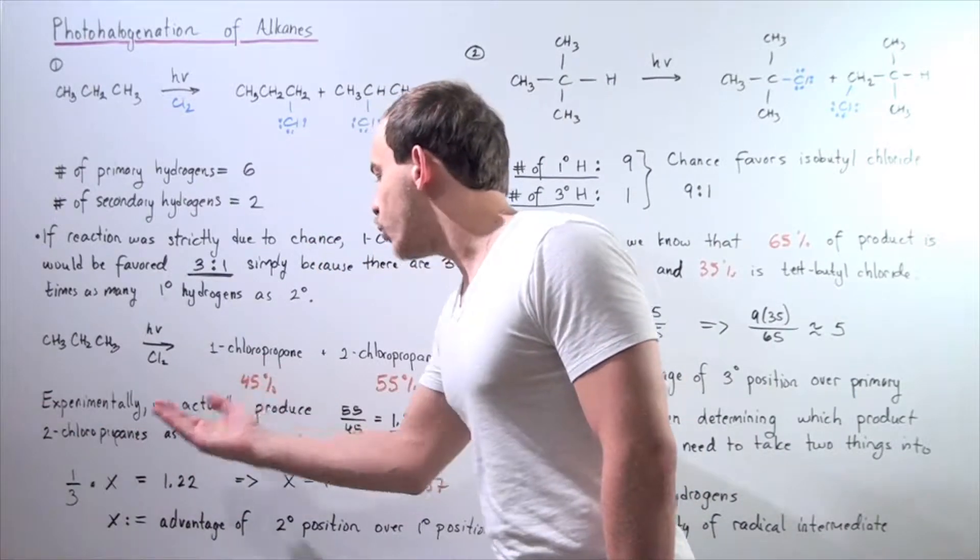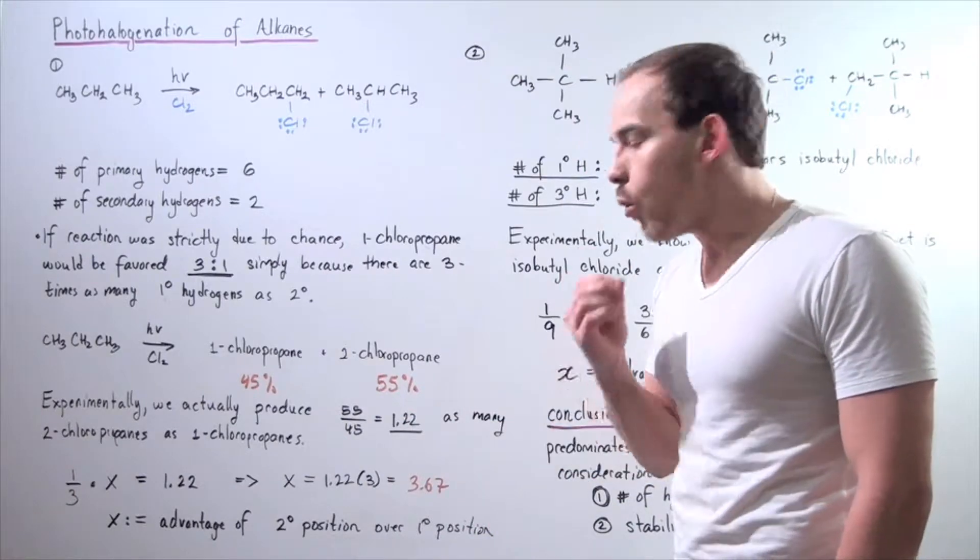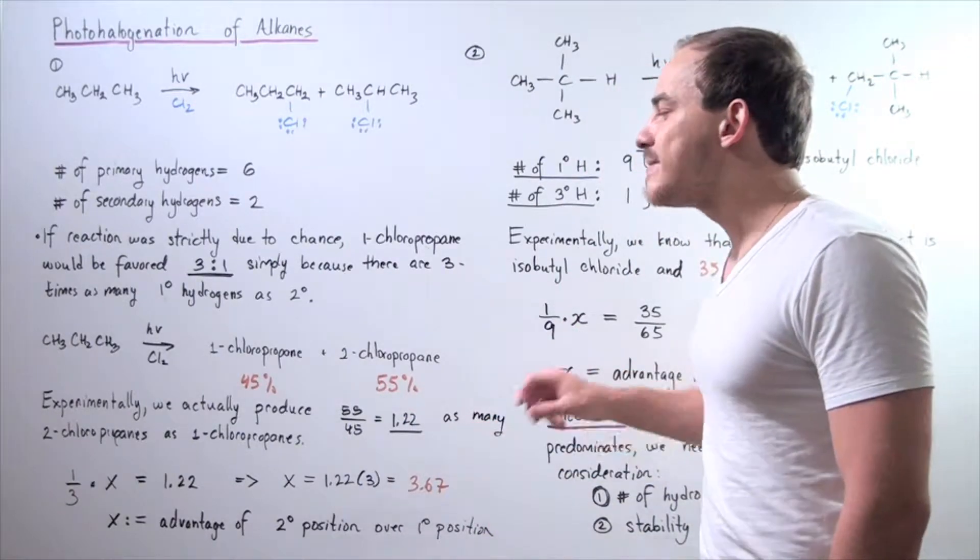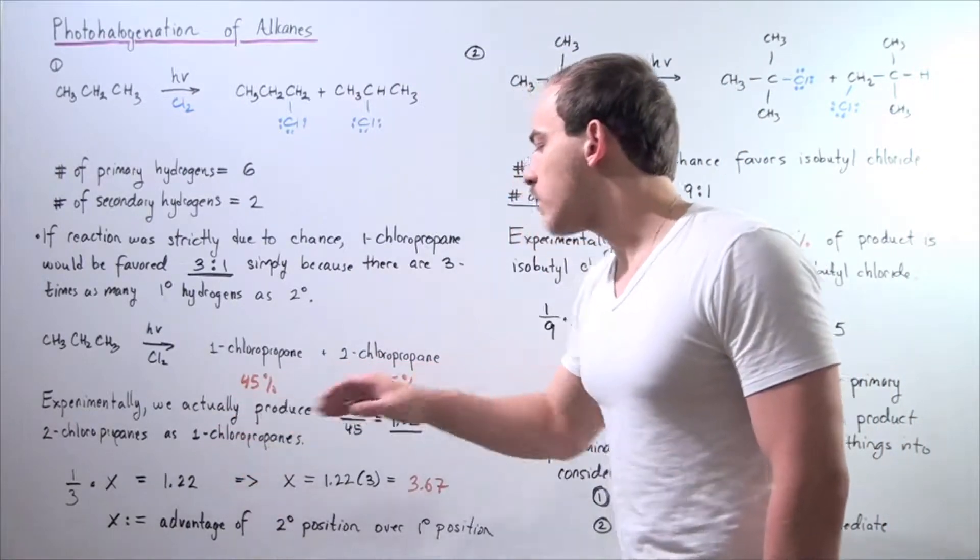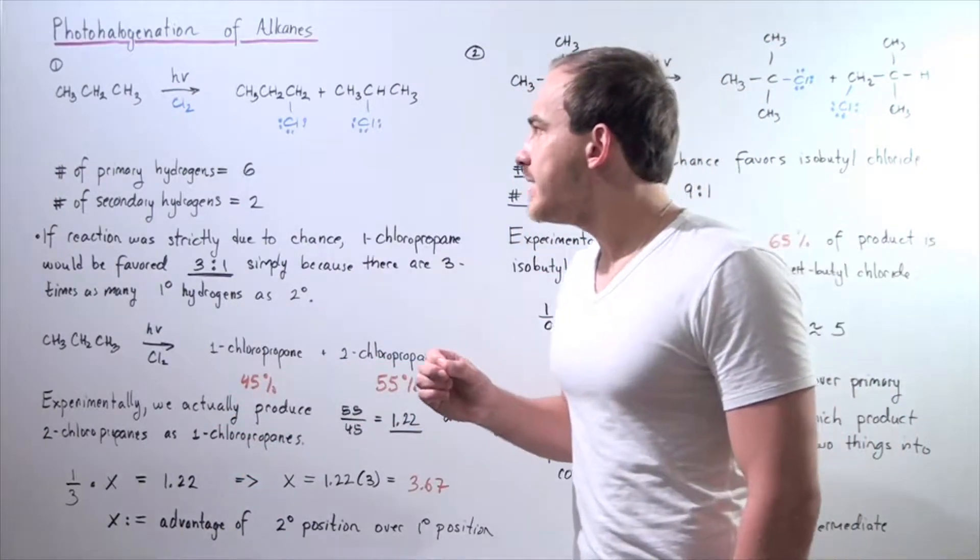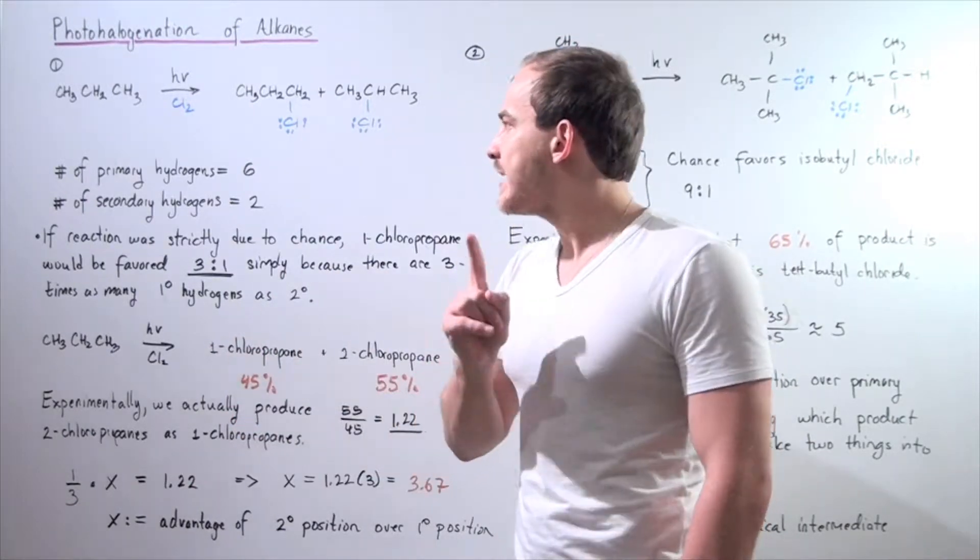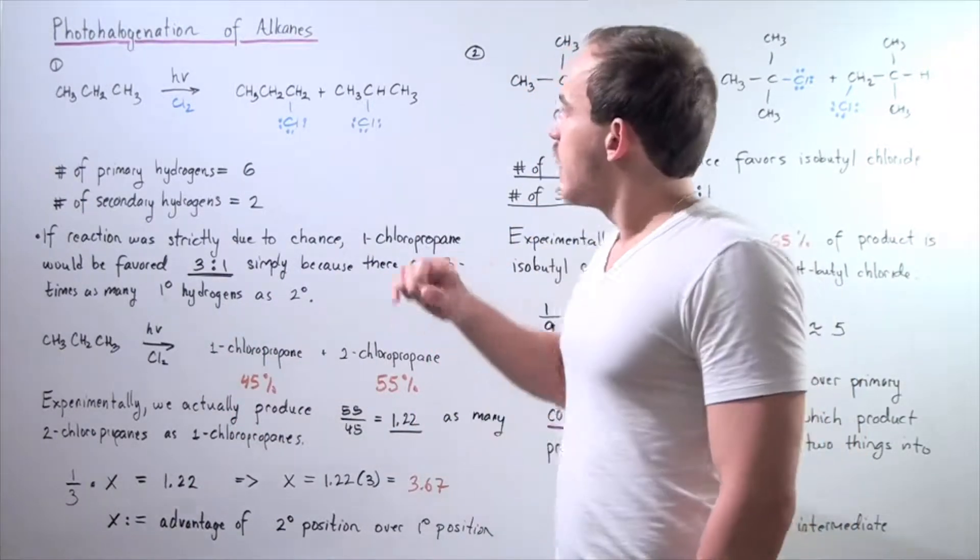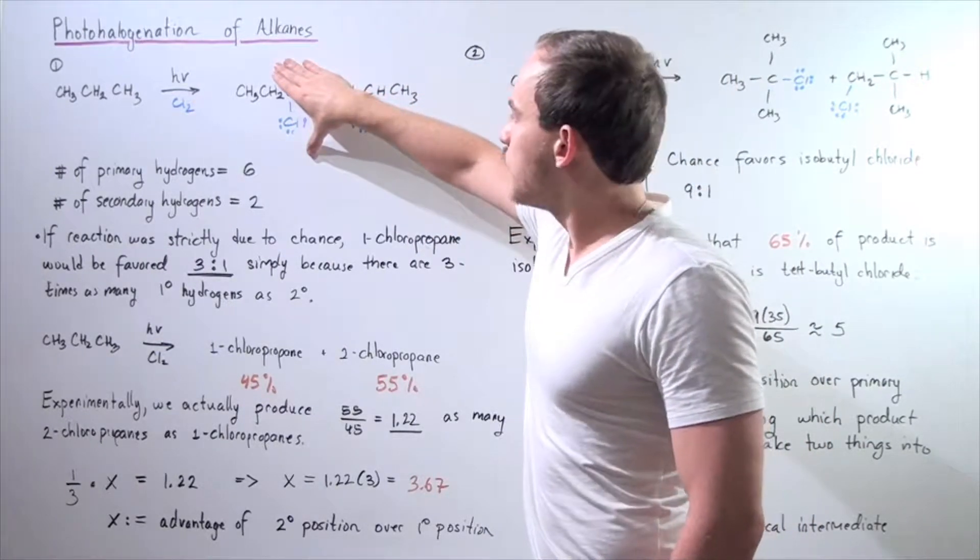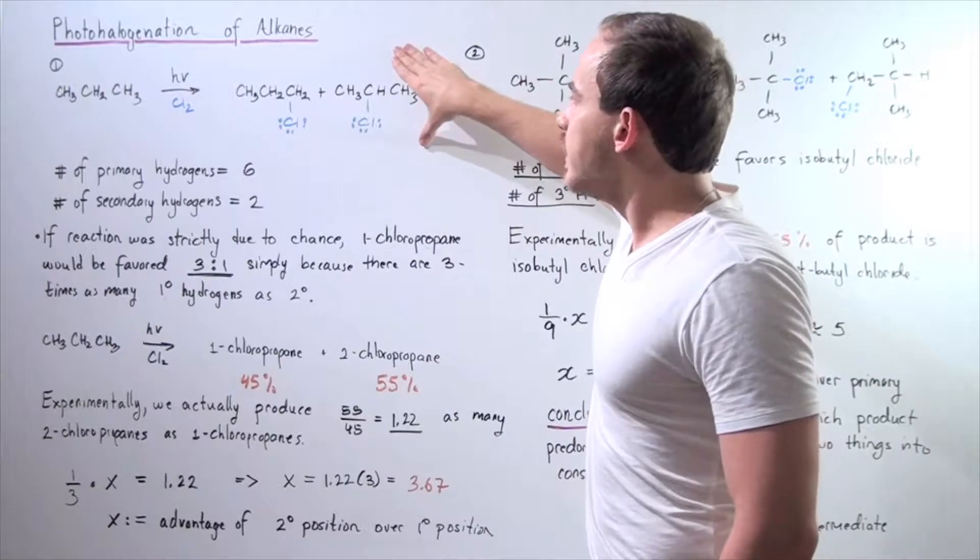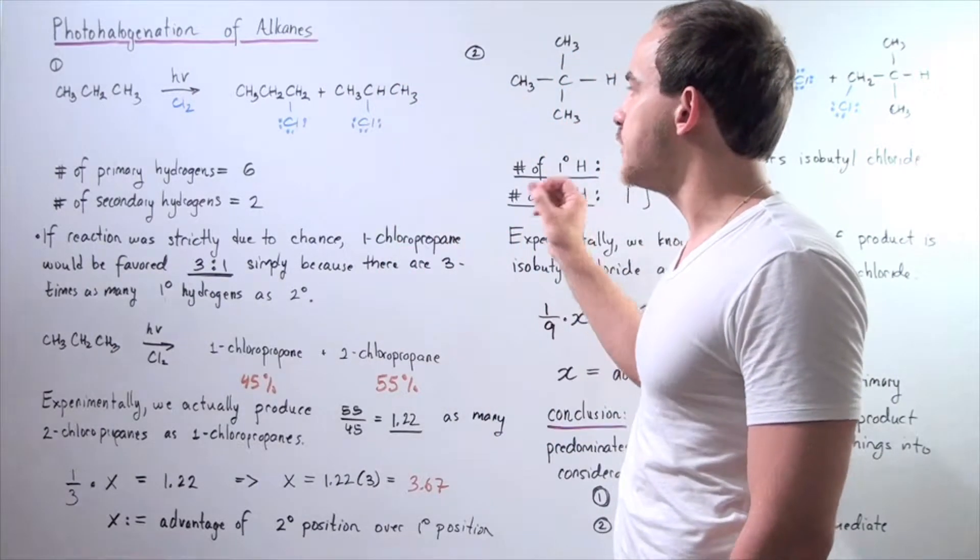Once again, experimentally, we actually produce 55 divided by 45, so 1.22 as many two chloropropanes as one chloropropane. That means there's some type of advantage which actually has to do with stability of producing this secondary versus this primary. And that stability has to do with hyperconjugation of the radical intermediate.